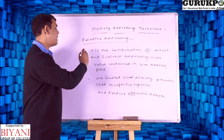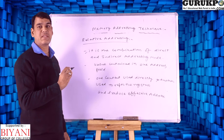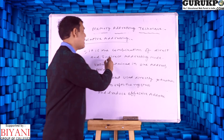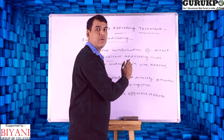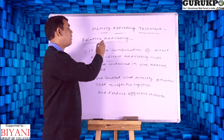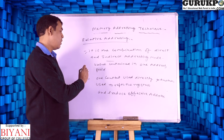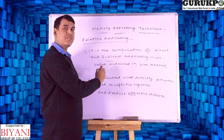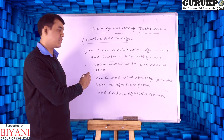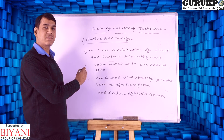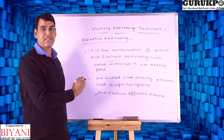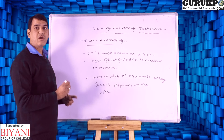In relative addressing mode, we have a combination of direct addressing and indirect addressing. The value contained in one address field is used directly, and another content is used to refer to the registers, producing some effective type of addresses.